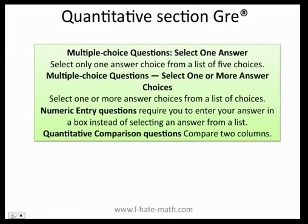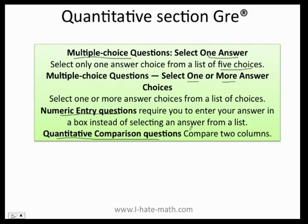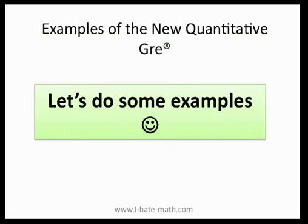Let's talk about the quantitative section of the GRE. Here you're going to have four different types of questions. You will have multiple choice questions with only one answer out of five choices. Then you'll have multiple choice questions where you can have either one or more answer choices — I think this is the hardest one from the whole test because the answer could be one, two, or more. Then you're going to have numeric entry questions where you have to type in your answer, and finally quantity comparison questions where you compare two columns.